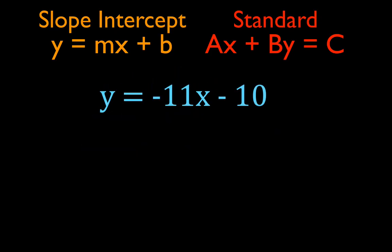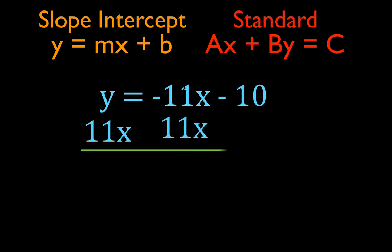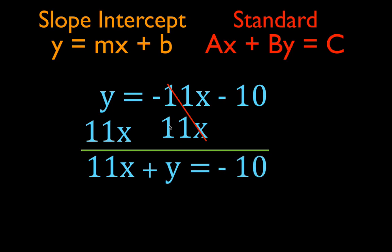The last equation: once again the slope is not a fraction, so we skip step 1 and go to step 2 — add the opposite of the x-term. The x-term is minus 11x, so we add 11x to both sides. On the left, 11x plus y. On the right, minus 11x plus 11x cancels to zero, leaving minus 10. The result is 11x plus y equals minus 10 — ax plus by equals c, with a positive a, no fractions, and b equals 1.